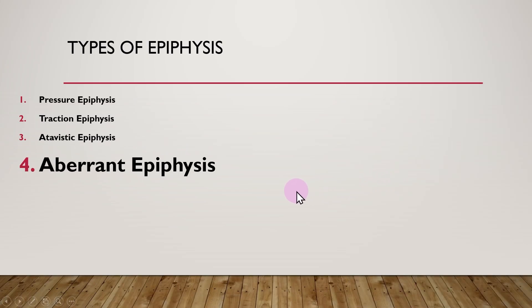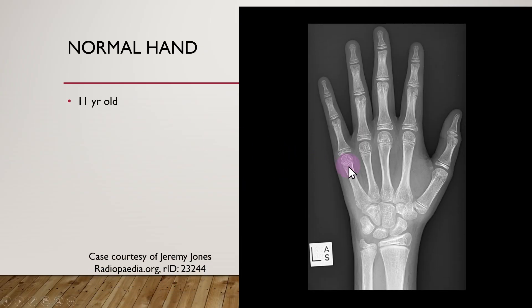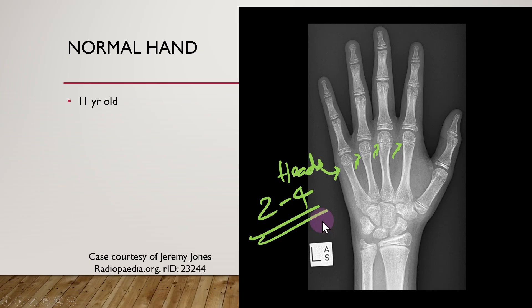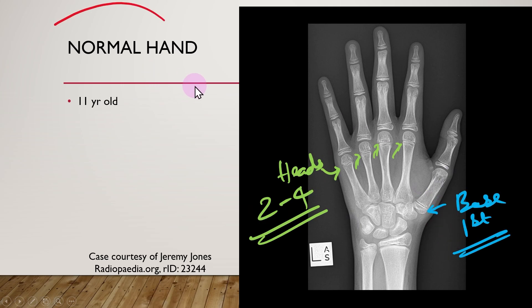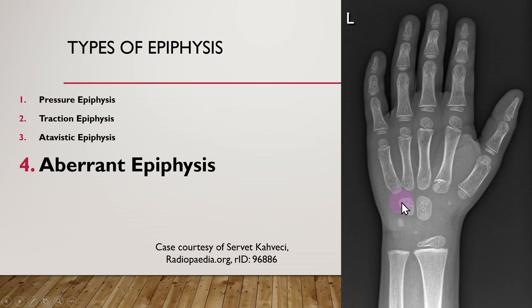The last type is called the aberrant epiphyses. To understand it, look at an X-ray of a normal hand of an 11-year-old child. The epiphysial plates in the metacarpals are classically located at the head region in the second to fourth metacarpals, and at the base in the first metacarpal. In an aberrant epiphyses, there is an extra epiphysial plate — in this case located at the base of the second metacarpal. It is also called a pseudo-epiphyses.